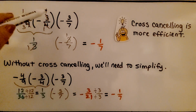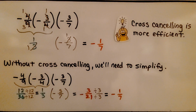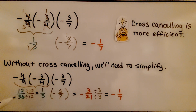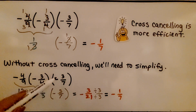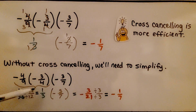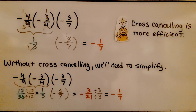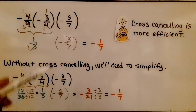Without cross-canceling, we'd need to do four times three is twelve and nine times four is thirty-six. Two negatives give a positive twelve thirty-sixths. We simplify by dividing both by twelve to get positive one-third. Then multiply by negative three-sevenths: one times three is three, three times seven is twenty-one, giving negative three twenty-firsts. Divide by three to get negative one-seventh. Do you see all the extra steps we had to take? Cross-canceling is more efficient.